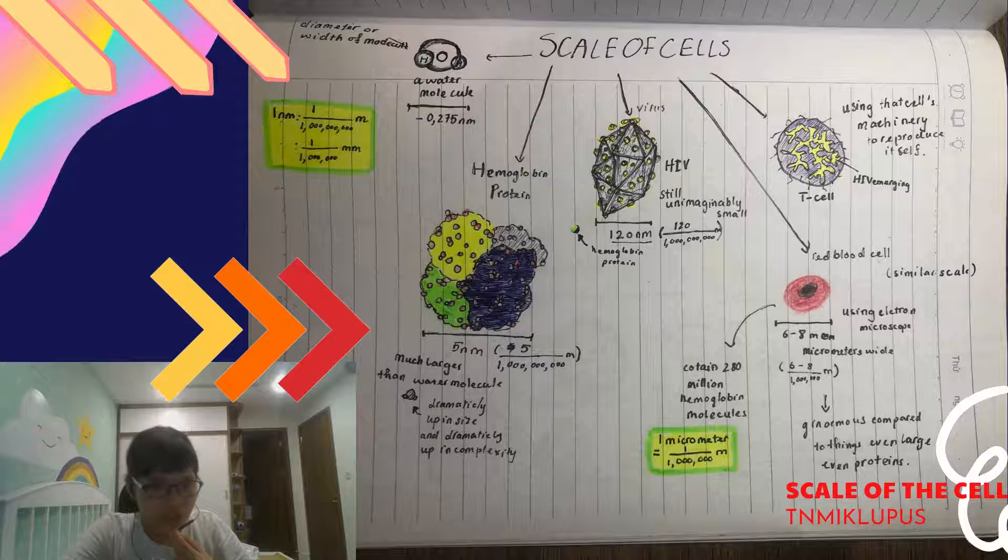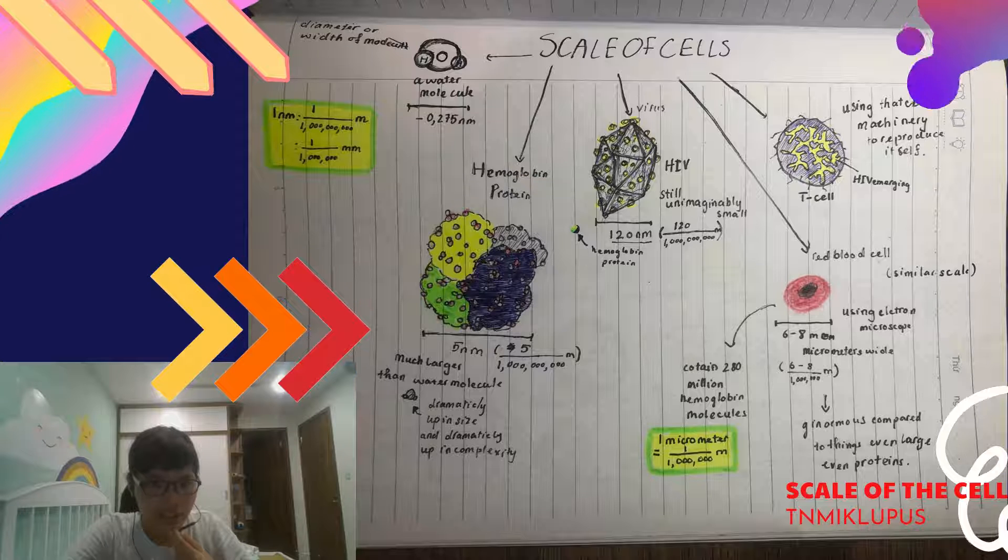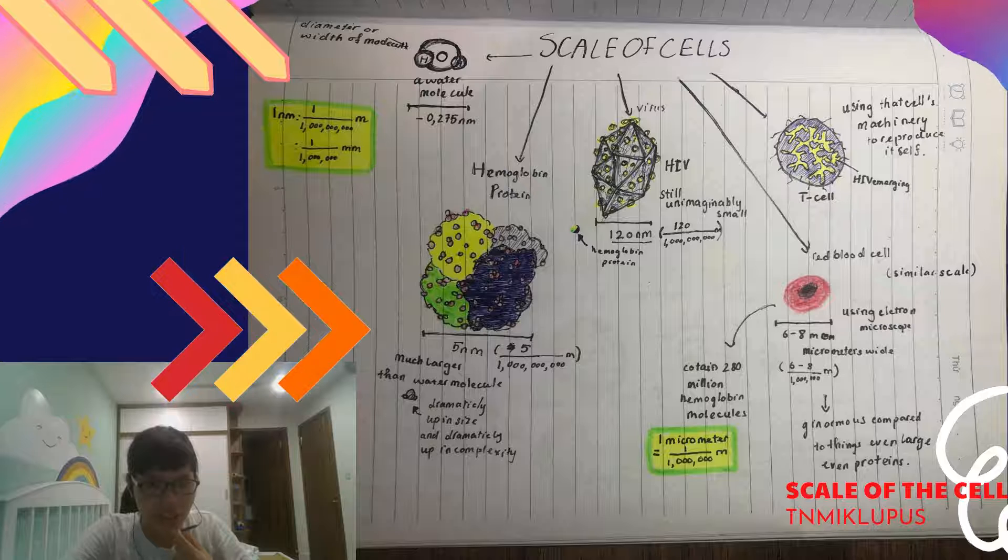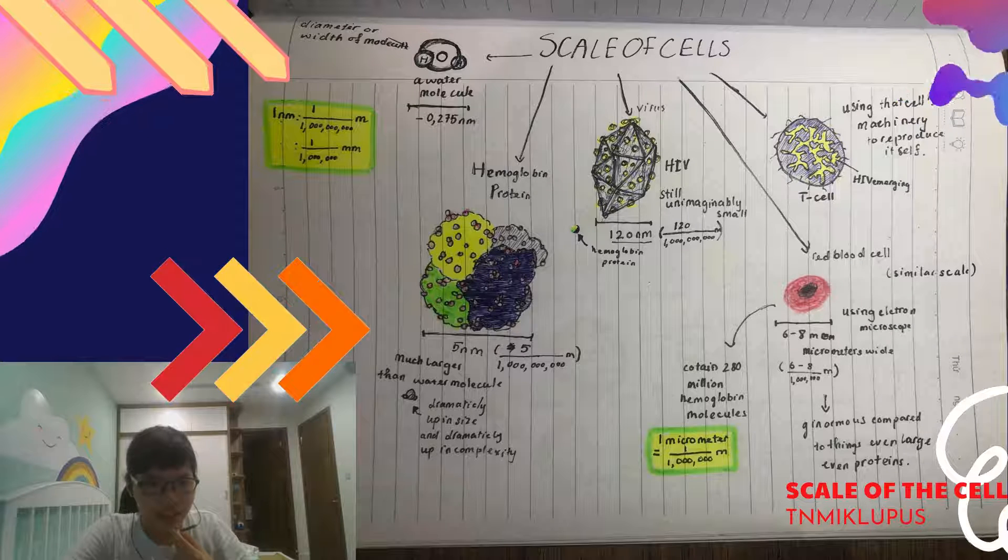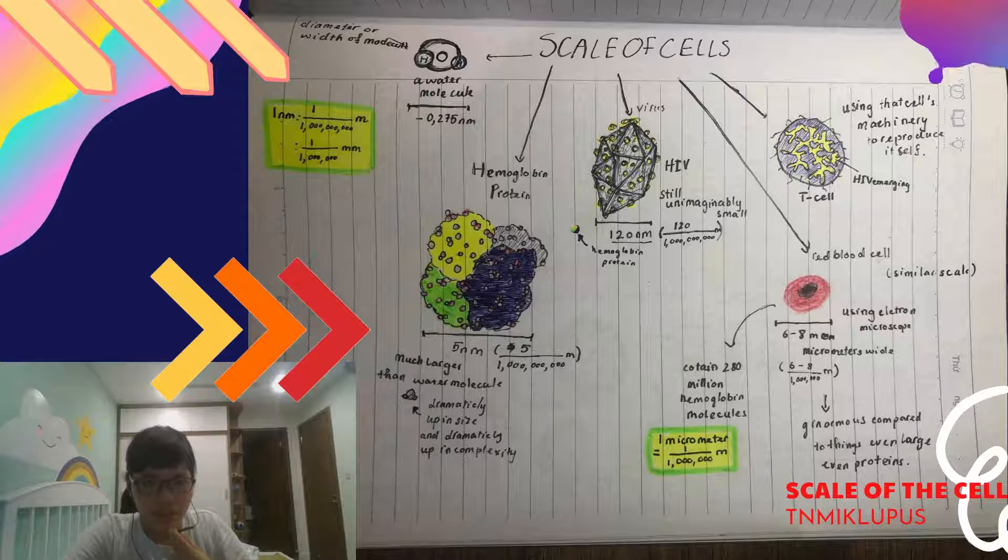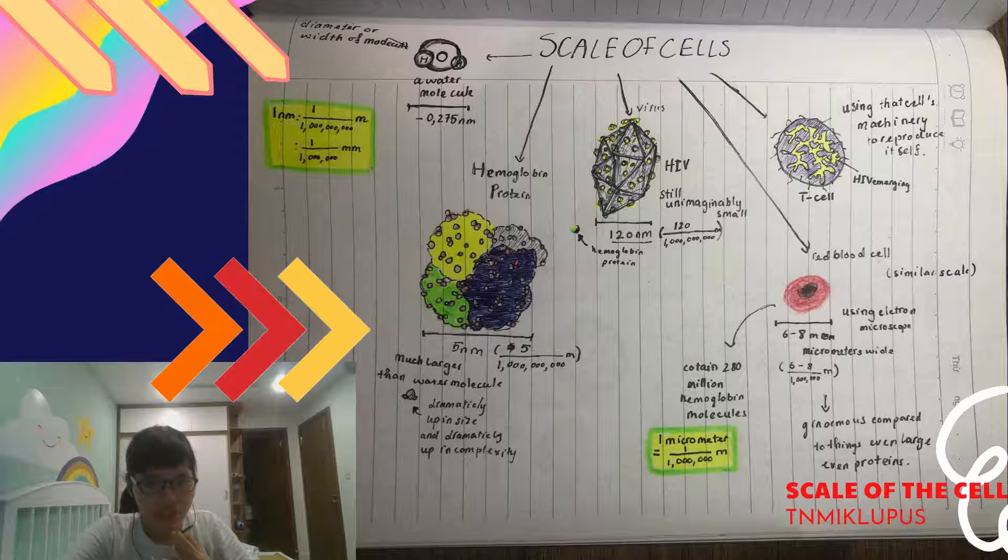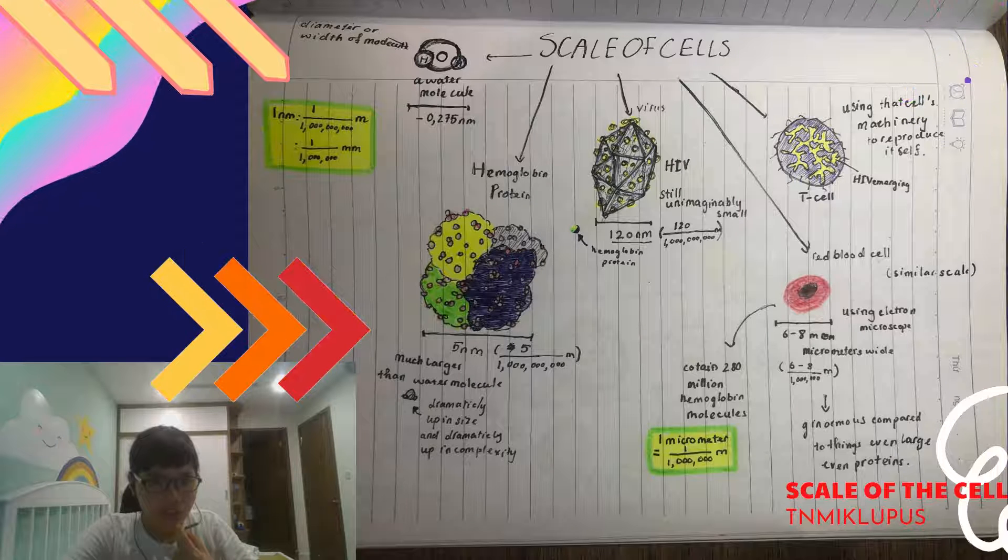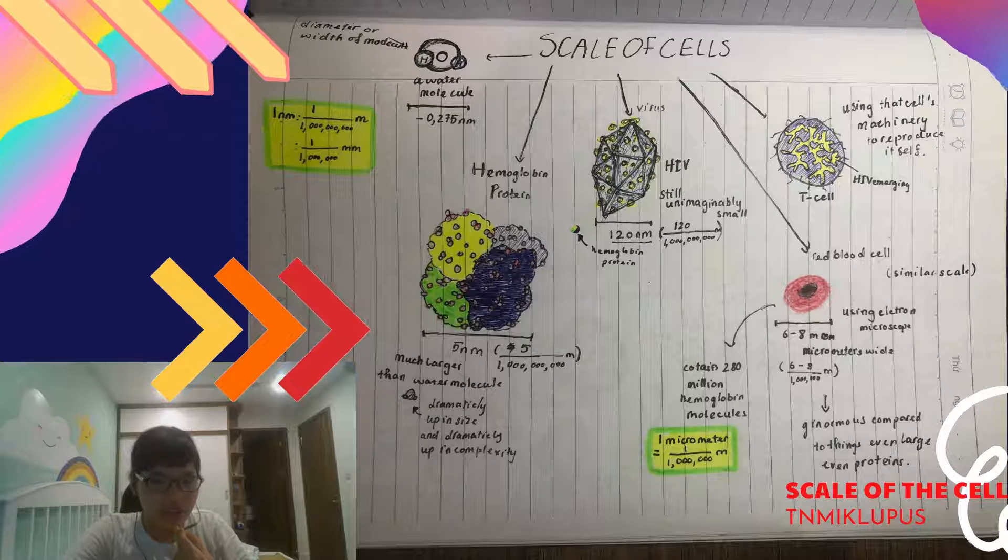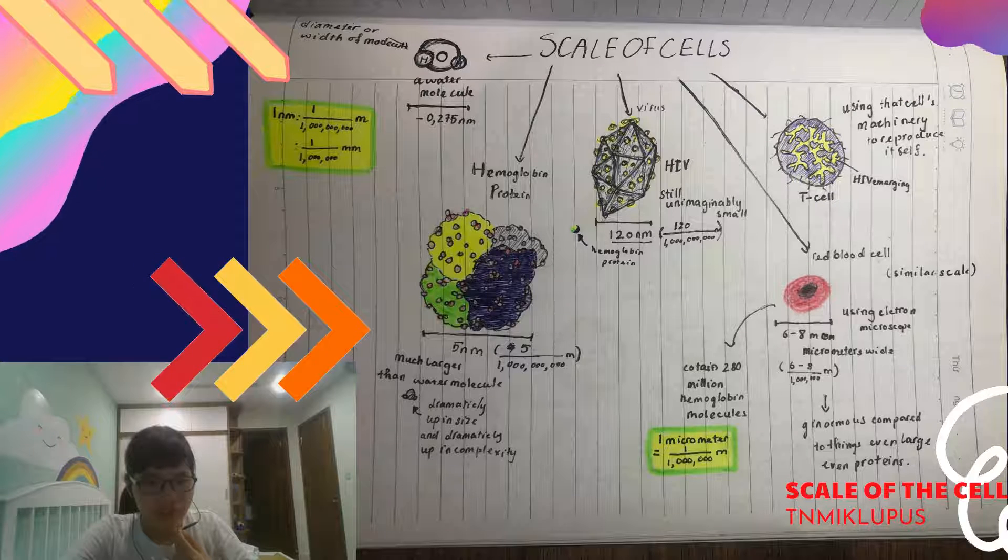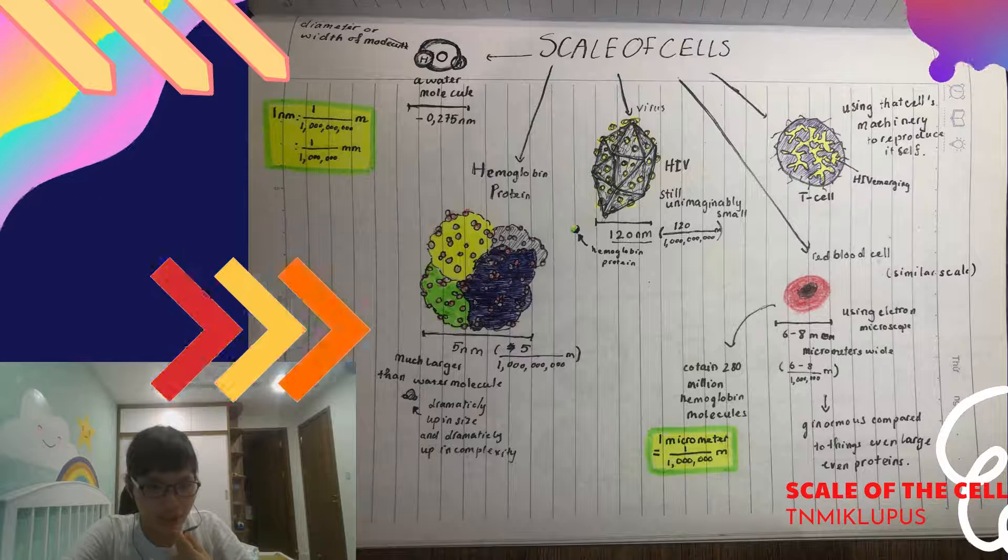And this drawing over here is a T cell. You can see the HIV is that yellow thing and it is taking advantage of the T cell. That's why it is creepy. It is using that cell machinery to reproduce itself. You can see in the picture how small the HIV is compared to the T cell.